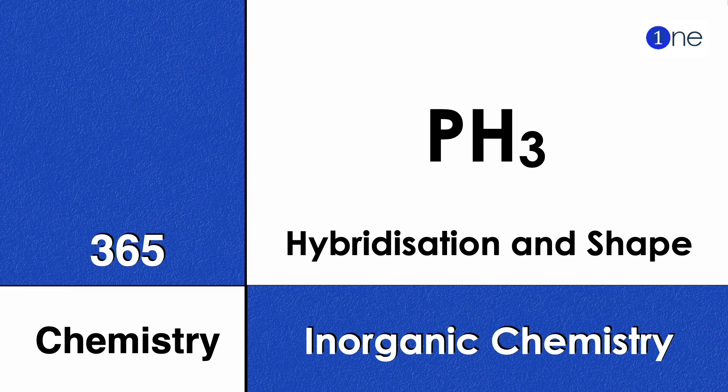Welcome to One Chemistry, this is 365 Chemistry series, inorganic chemistry questions for you. Here you have phosphine which is PH3. You should find hybridization and shape of it.